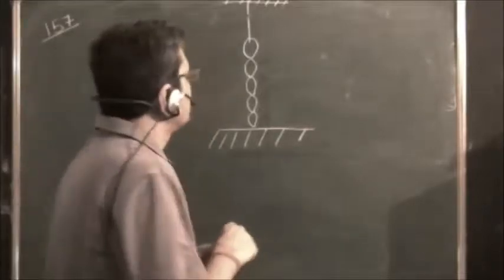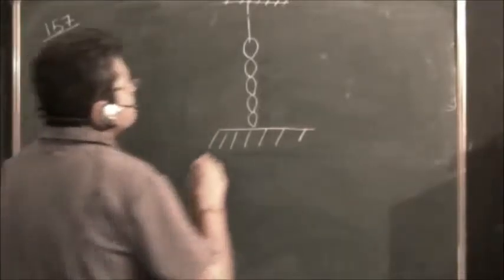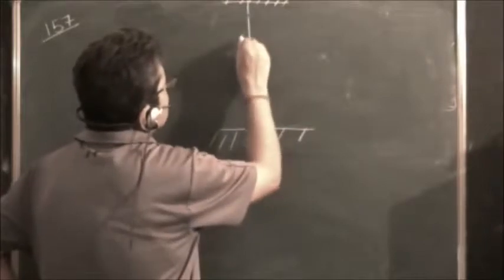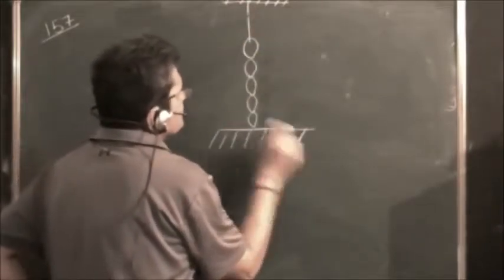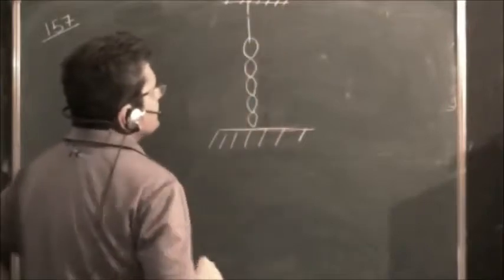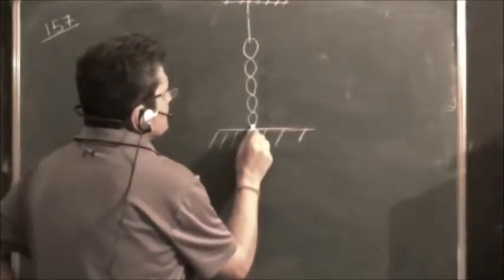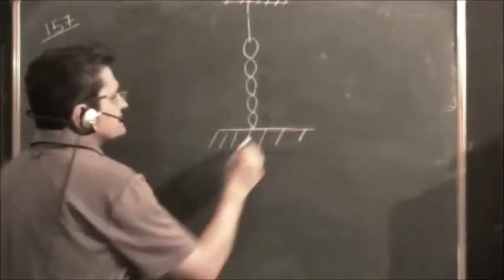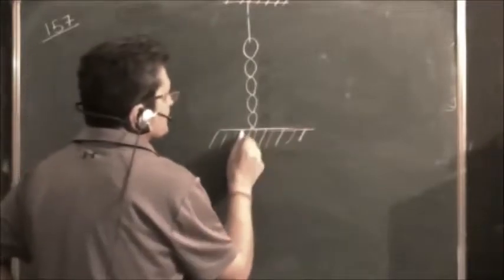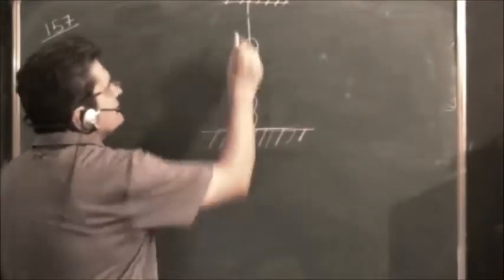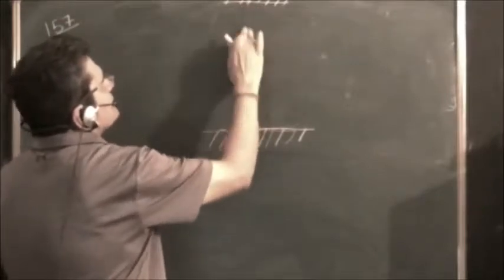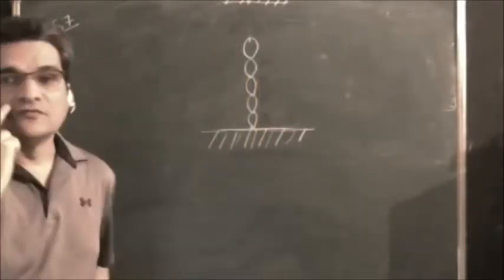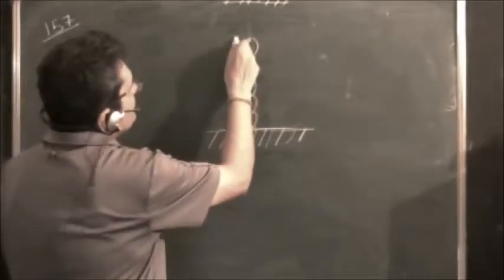We will solve Problem 157. It's a chain problem in which a chain is hanging freely like this, tied to a thread and touching the lower part. The lower part of the chain is just touching the table surface. This is the table surface. This thread is burnt, means the contact or the support is removed.